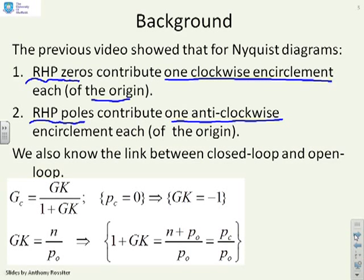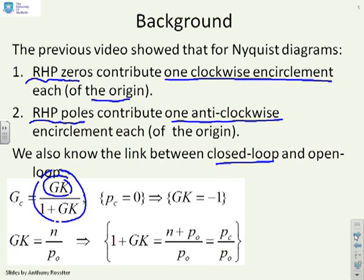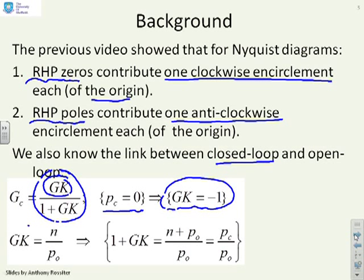We also know there's a strong link between closed-loop and open-loop. If the open-loop is Gk, then the closed-loop is Gk over 1 plus Gk — that's for a simple feedback loop. We also know that the closed-loop poles can be determined by solving Gk equals minus 1. Now, let's assume that Gk can be written as a numerator over a denominator: N over P0.